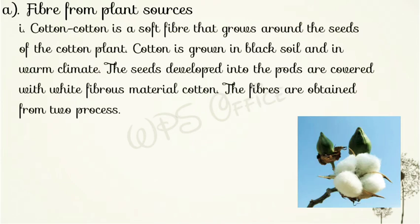The seeds develop into pods and are covered with white fibrous material — cotton. पहले फूल लगता है जो हल्के सफेद या पीले रंग का होता है। कुछ दिनों में यह फूल गुलाबी रंग के हो जाते हैं। जब फूल की पंखुड़ियाँ झड़ जाती हैं, तो उनके अंदर से एक pod निकलता है। जब वह pod विकसित होता है तो सफेद रंग का cotton उनके बीजों के चारों ओर होता है।